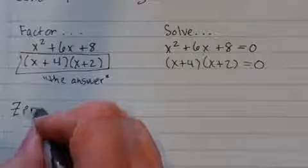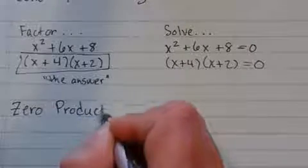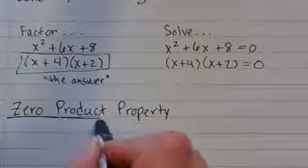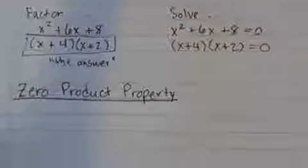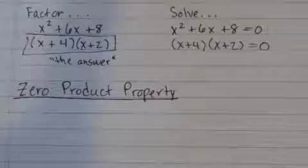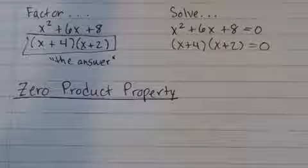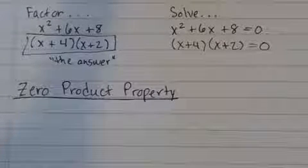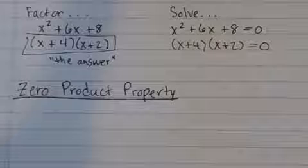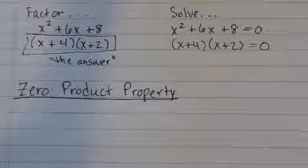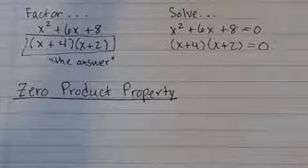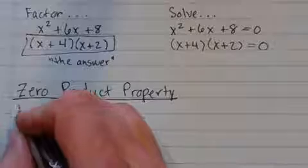And that's going to be using something that's called the zero product property. The zero product property makes some good common sense, if you think about it. It basically says that if you have two things that are multiplied by each other and the answer or the result or the product is zero, then at least one of those two things had to be zero. I mean, you can't do, like, 4 times 2 and get zero, but you could do 4 times 0 and get zero, or you could do 0 times 2 and get zero.